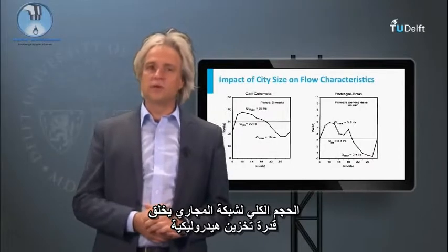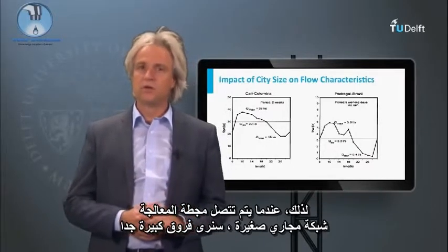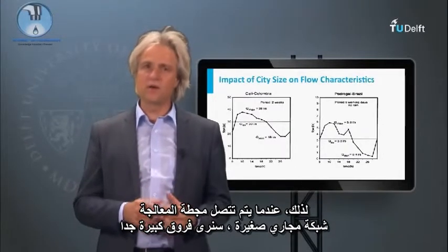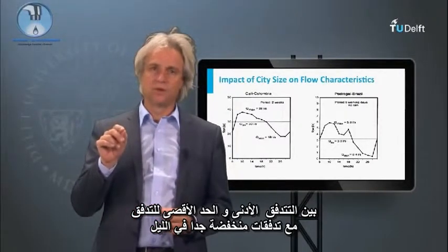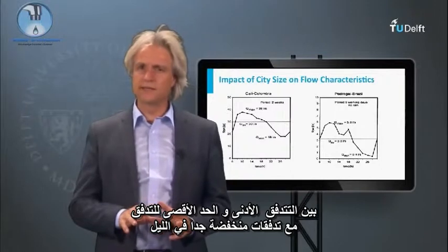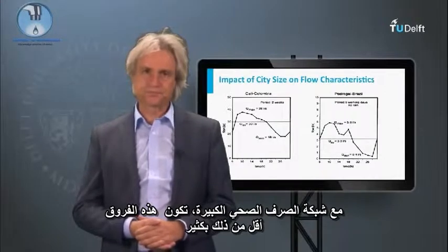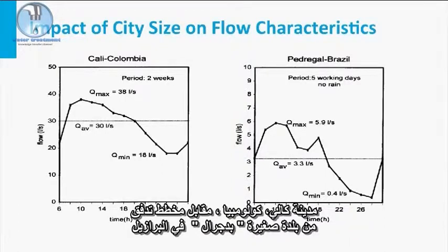The total volume of the sewer network creates a hydraulic buffer. Therefore, when an STP is served by a very small sewer network, we will see a very large flow difference between the minimum flow and the maximum flow, with very low flows in the night. With a large sewer network, these differences are much less. In this slide, you see this exemplified by a sewage flow diagram of the provincial capital town of Cali, Colombia, versus the flow diagram of the small town of Pedigal in Brazil.